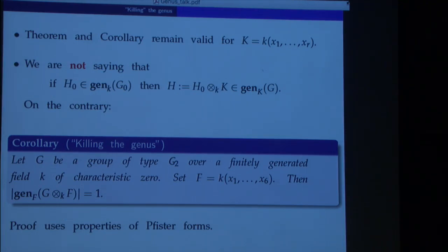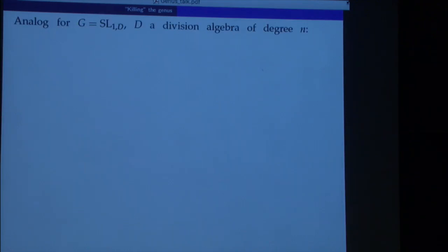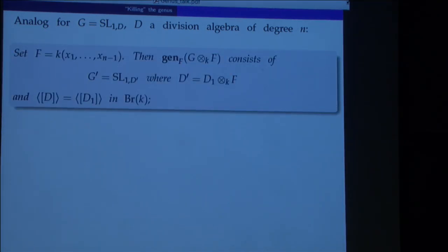The proof uses certain properties of pfister forms. The transcendence degree 6 comes because every group of type G2 is associated to a certain form in 8 variables: you set it equal to zero to get your field, which has transcendence degree 7; but if you homogenize, you can reduce it to 6. We have an analog of this fact also for SL_1(D) groups: the genus cannot get killed completely as observed earlier, but it can get as small as possible. Namely, if we have a division algebra of degree n, and we do the base change to a purely transcendental extension of degree n minus 1, the genus becomes as small as possible — generated by those classes that generate the same subgroup in the Brauer group.